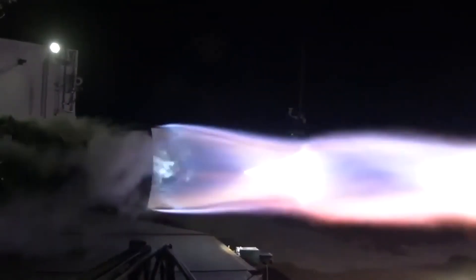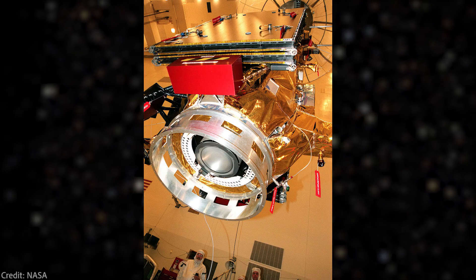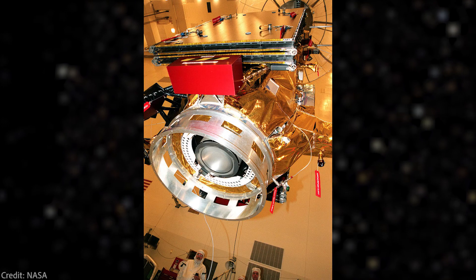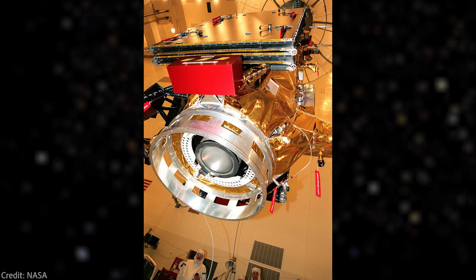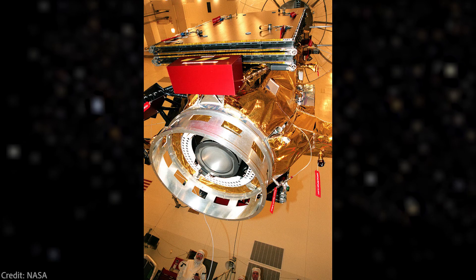For two million newtons of thrust. An NSTAR thruster, Dawn spacecraft had three of those. So it creates only 91 millinewtons of thrust. So it is many orders of magnitude lower.